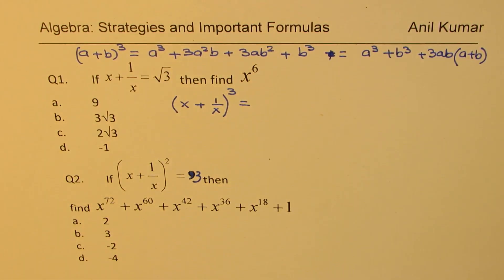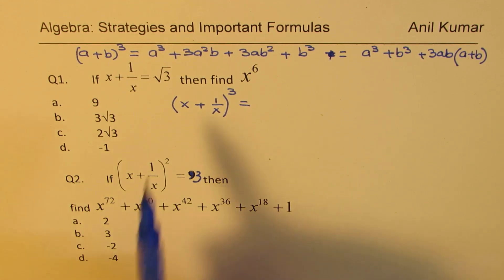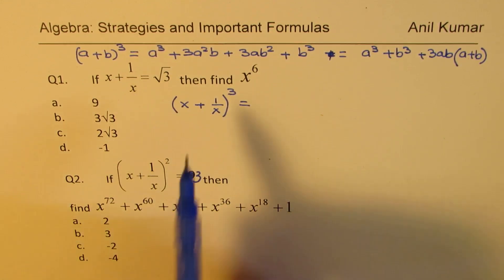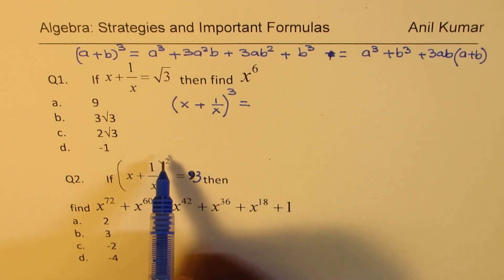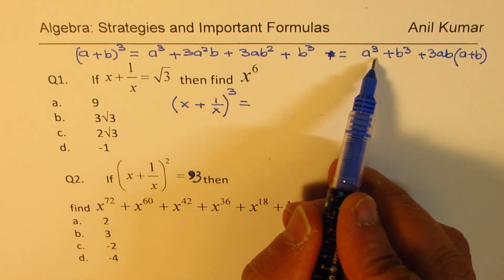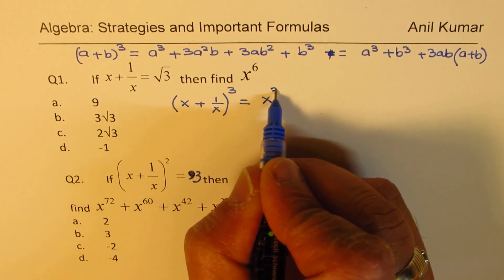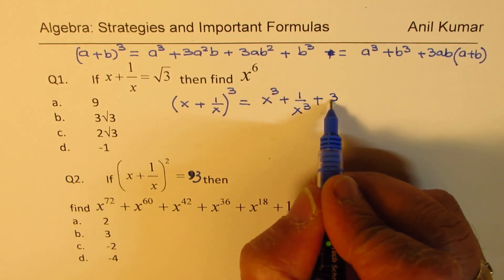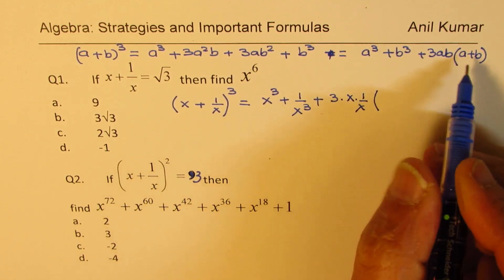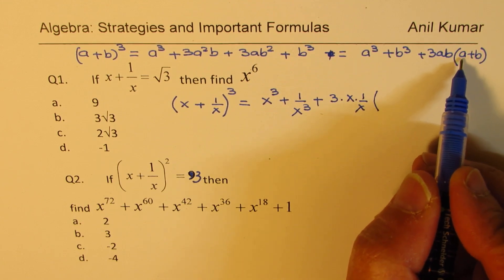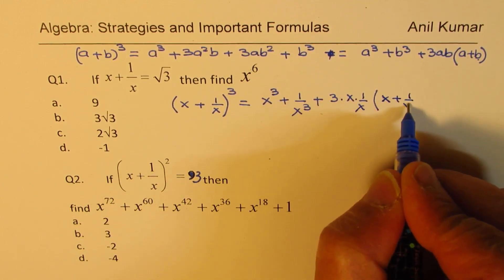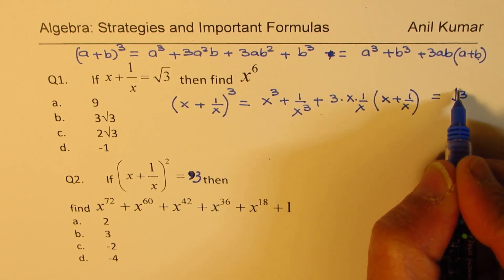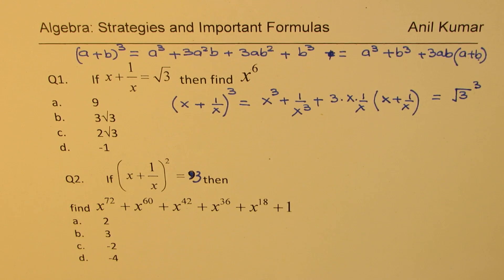We are given x plus one over x as square root of three. We'll cube this and rewrite. So x plus one over x to the power of three — when we cube, we apply this formula. We get x cube plus one over x cube, plus 3 times x times one over x, and within the brackets, x plus one over x. We know that x plus one over x is equal to square root of three, so we cube this.